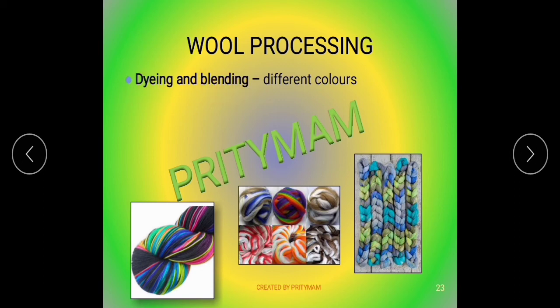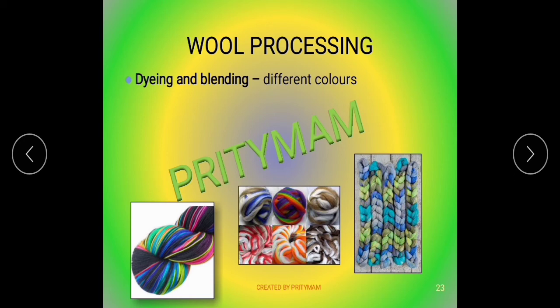Wool can be dyed into different colors after it is scoured or after it is spun into yarns. Different kinds of fibers can also be blended mechanically. As you can see here, the process of dyeing involves coloring the wool fleece, which is naturally white or cream in color and therefore needs to be dyed.